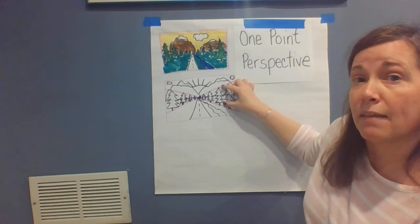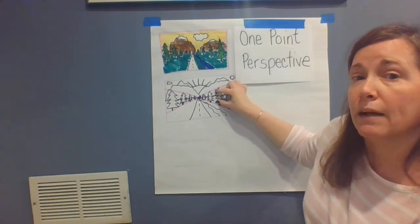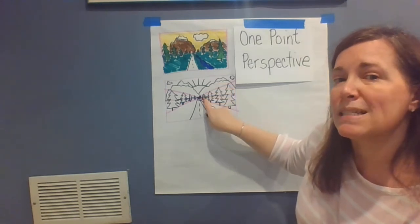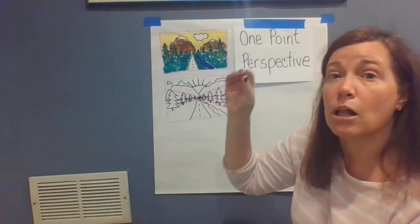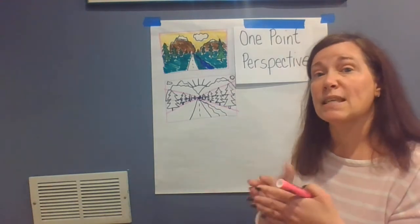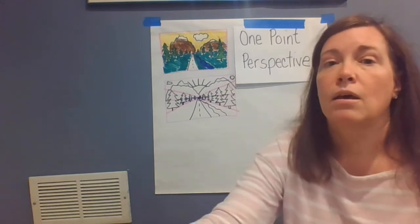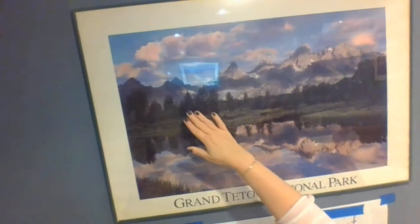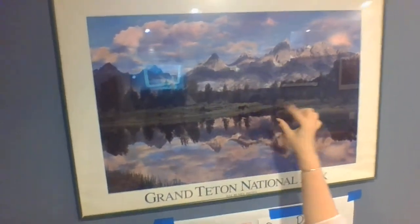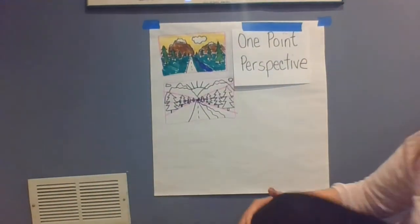We start with trees in the foreground, and then they go towards the middle ground. As they recede and almost disappear into the background, they get smaller and smaller and smaller. So instead of on a flat surface, like in a landscape where we can see things in the foreground and then further away in the background — they don't recede into one vanishing point the way they're going to do in our drawing.